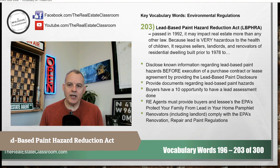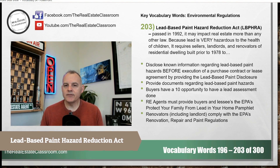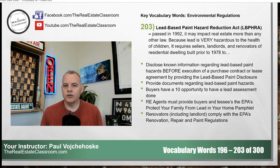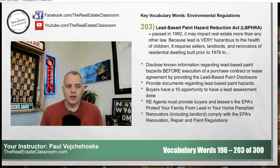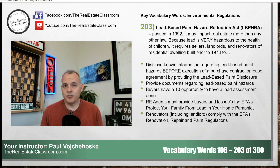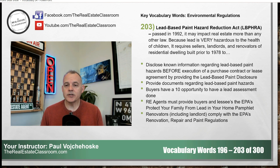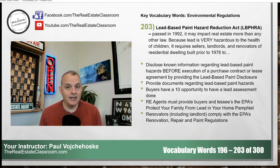Number 203, the Lead-Based Paint Hazard Reduction Act. You have to know it was passed in 1992. Lead is extremely dangerous to human beings — exceptionally dangerous to women who are pregnant and to children. There are certain requirements that the law places on sellers, landlords, and renovators of homes built prior to 1978 — another key date you have to know. These are homes built prior to 1978, not homes built in 1978, so keep that in mind.